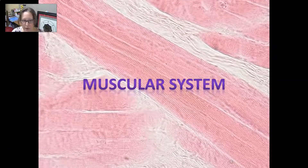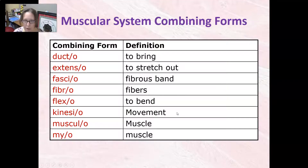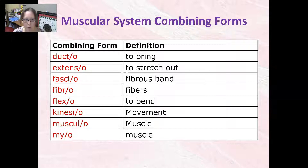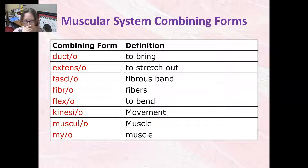Hi, this is Dr. A with the medical terminology video of the word parts of the muscular system. Let's go over the combining forms of the muscular system. Ducto means to bring. If you just looked at the anatomy and physiology video, this is what we talked about with abduction and adduction — away from the body and back towards the body.